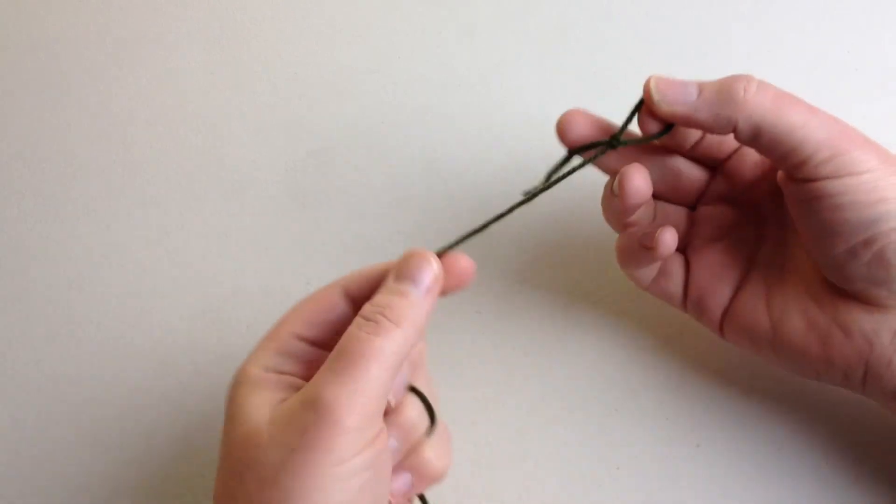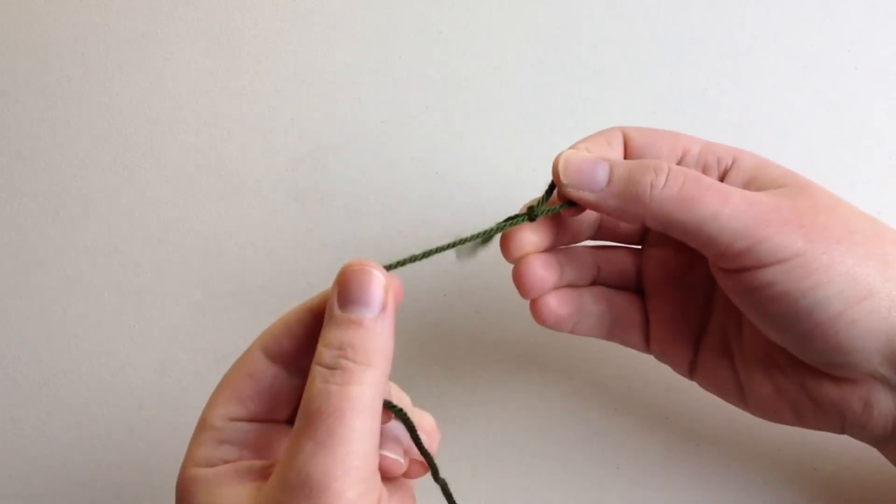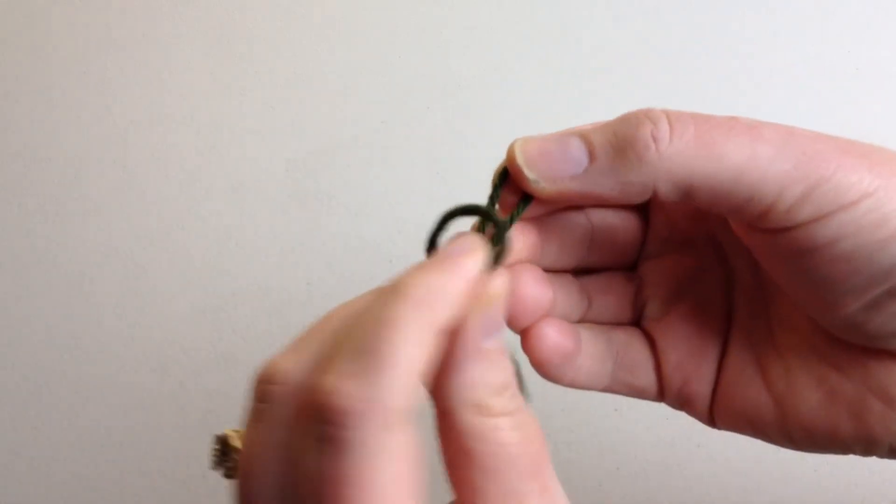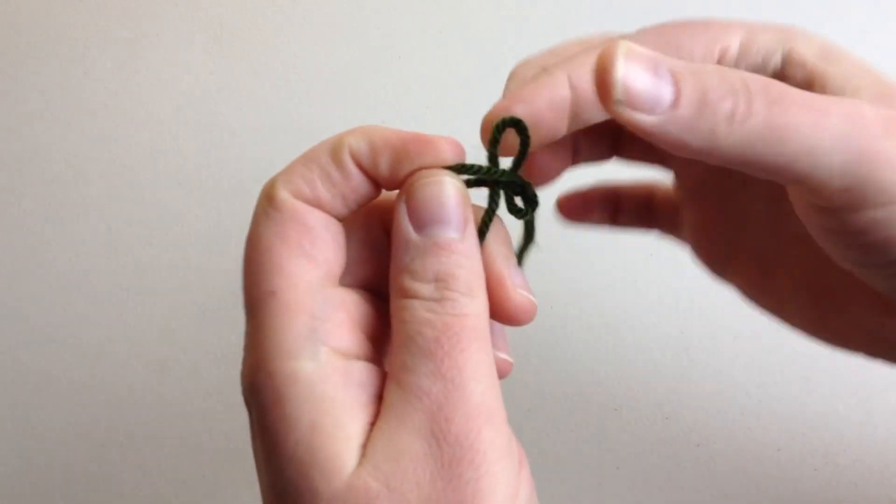We're going to feed from our working strand that's coming from the ball. We're going to put this extra yarn through here, through the loop in the back, and now we've got two loops.